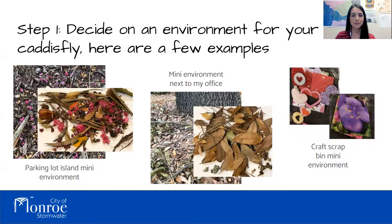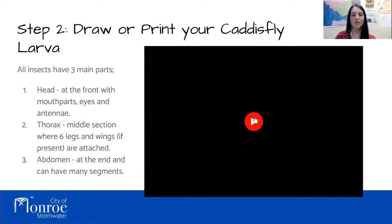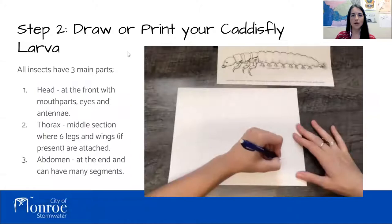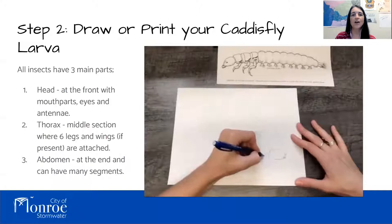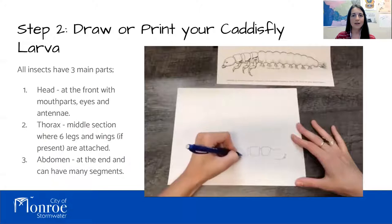If you are drawing your caddisfly by hand, I'm going to do a quick sped-up version of me drawing. Feel free to pause the video to draw your larva and resume once you have fully drawn an outline, and we can cut out and decorate our caddisfly together. Remember, all insects have three body parts. I started with the head, and I'm now working on the thorax, and now I'm moving to the abdomen at the end.